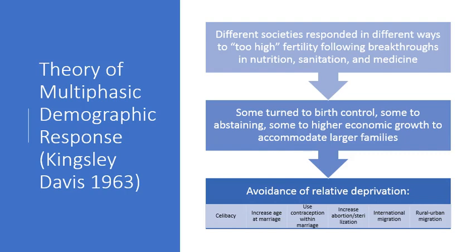This was a theory that considered how different societies responded to the condition of having very high fertility levels, which resulted in the 1940s, 50s, and 60s as countries were modernizing. Some turned to birth control, some leaned more heavily on the principle of abstention, some turned to economic modernization, and urbanization would follow with that, generally coming up with avoidance of relative deprivation strategies.